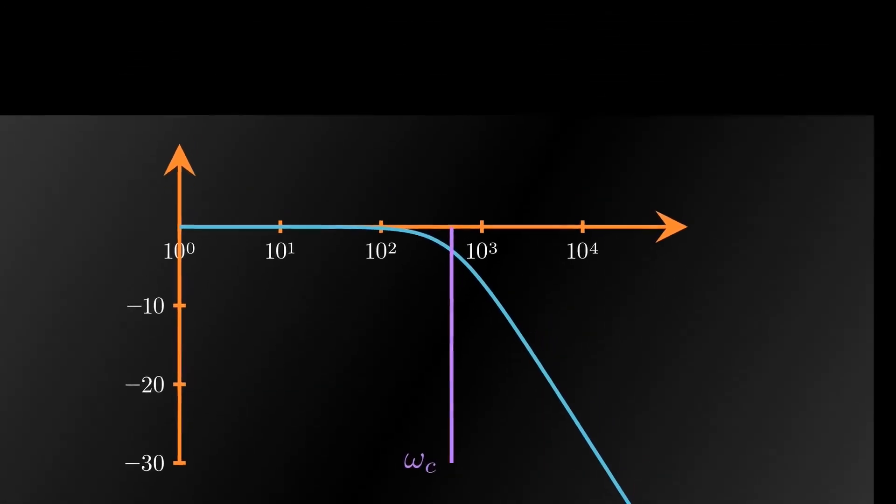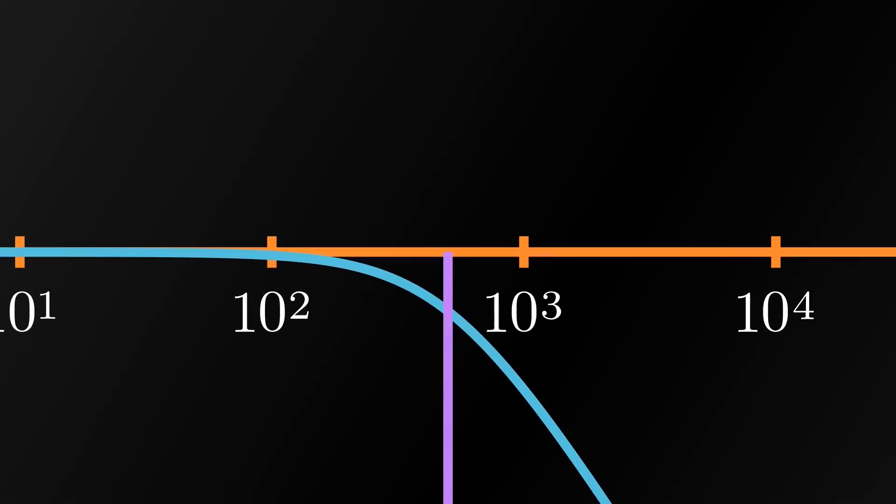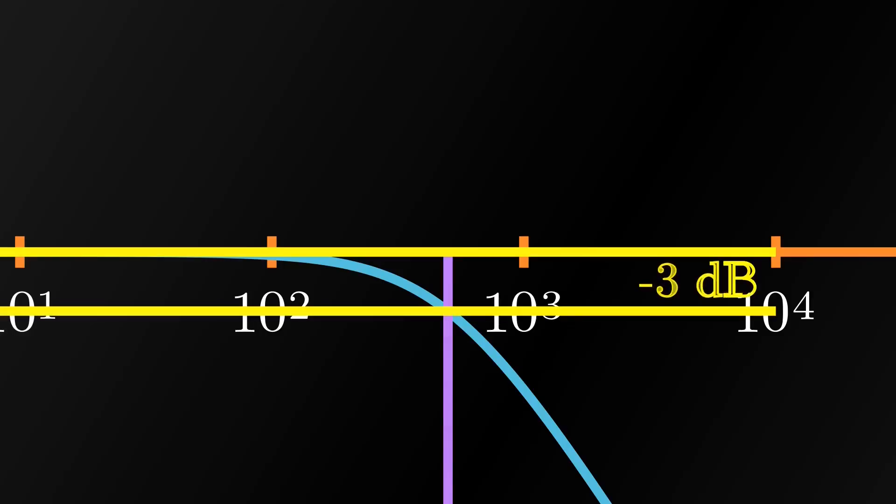By increasing the frequency, eventually we reach the cutoff frequency. Here, the gain is 3 decibels lower than that of the passband gain. This is a natural consequence from the mathematical expression.